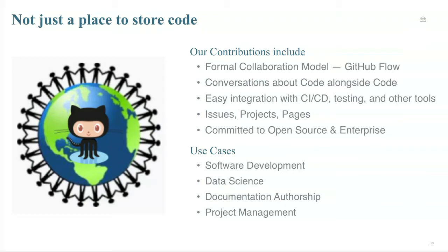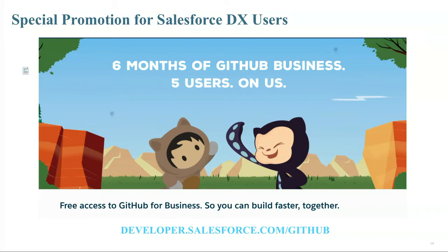GitHub is not just a place to store code. There's a formal collaboration model where we enable conversations about code alongside the code. We integrate with DevOps tools — CI, CD, testing. We have features geared towards project management, documentation, and communication. Something like 52% of the Fortune 50 uses GitHub Enterprise, our on-premise offering. We're also having a special promotion for Salesforce DX users: six months of GitHub Business for five users — on us. Go to developer.salesforce.com/GitHub to activate that, or visit our booth for more info.